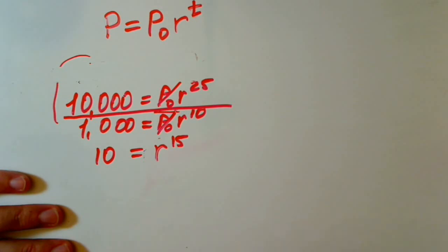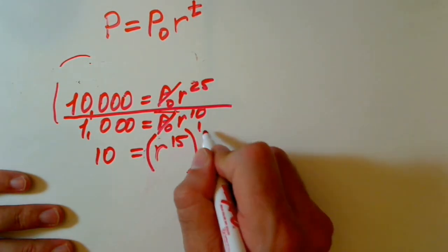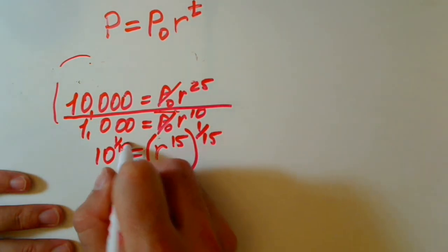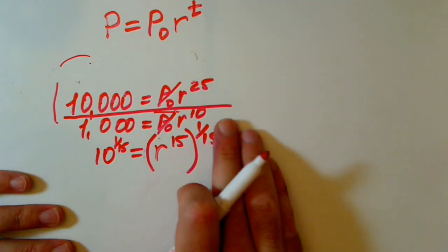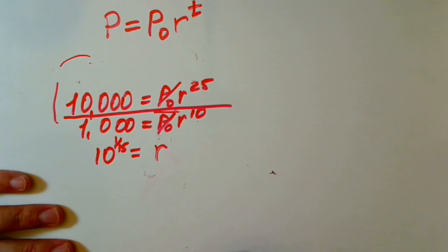Now to solve for r, we have to cancel the 15th. That way we are raising it to 1/15th power. And then also 10 to the 15th. And what do we have?